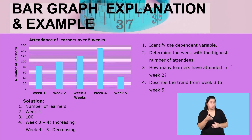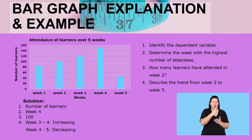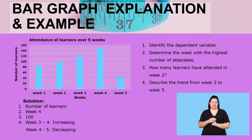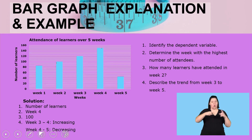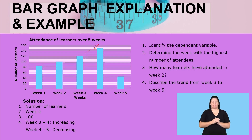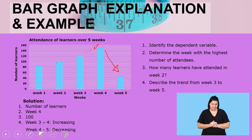How many learners attended in week two? Let us have a look at week two. This is the second week — this value is 18 and this one is 100. The number of learners who attended is exactly on the line of 100, therefore it is going to be 100. Finally, describe the trend from week three to week five. From week three to week four it was increasing, and from week four to week five it was decreasing.